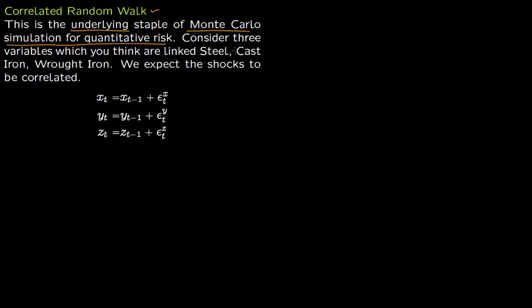Let us give an example. Say you start with three variables which you think their prices are linked: steel, cast iron, and wrought iron. You expect the shocks to be correlated.